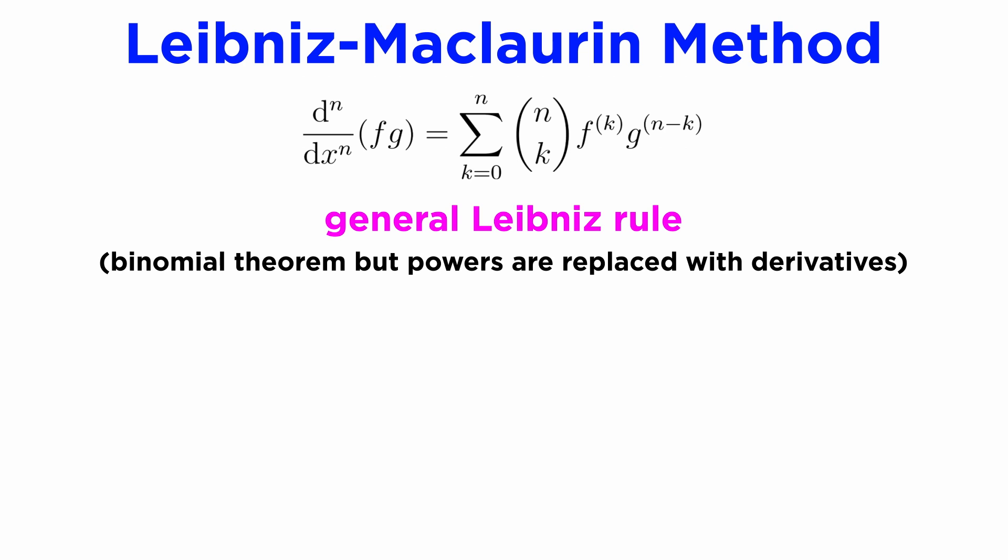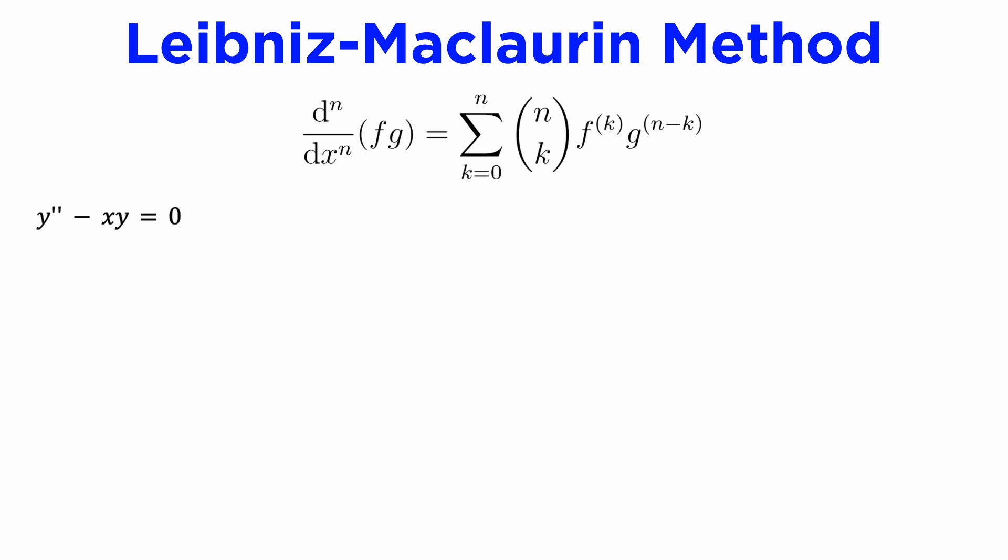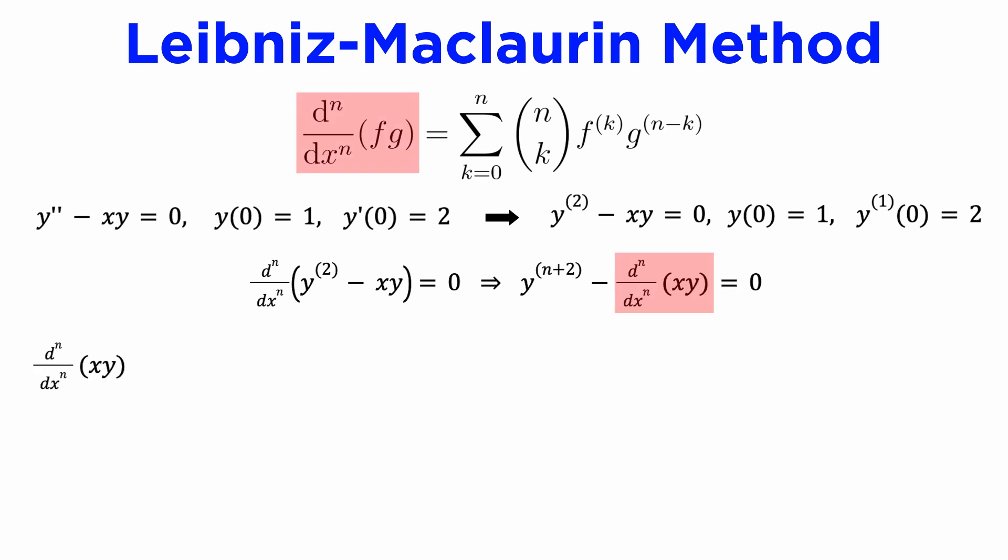Let's now see how the Leibniz method works with the same example as last time. We start with y double prime minus xy equals zero, with the initial conditions y(0) = 1 and y'(0) = 2. It will be helpful to quickly change the derivative notation to match that in the formula above. What we now need to do is take our differential equation and differentiate both sides with respect to x, n times. The y double prime term will become y differentiated n plus two times, which we will write in this notation. But for the xy term, we need to use our general Leibniz rule to find the nth derivative of xy. The nth derivative of xy will be the sum from k equals zero to n of the binomial coefficient nk times x differentiated k times times y differentiated n minus k times.